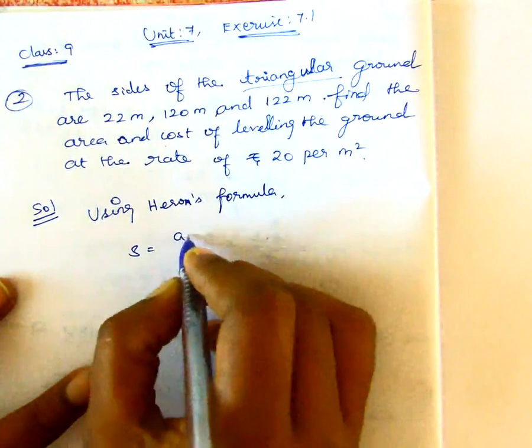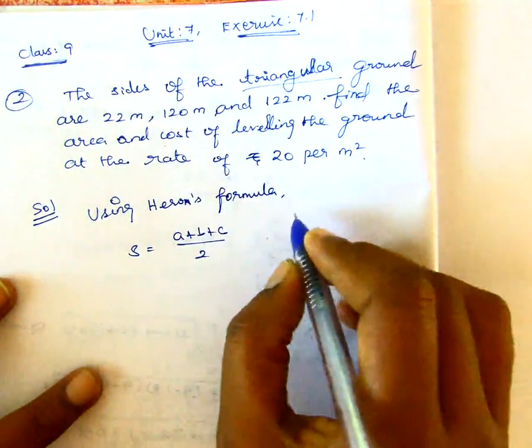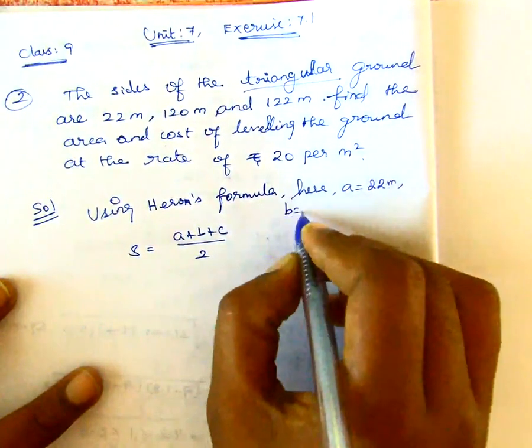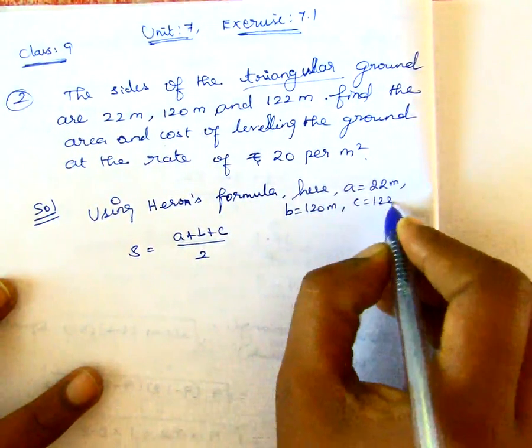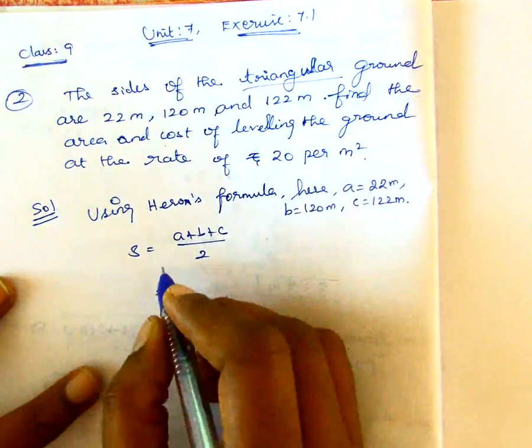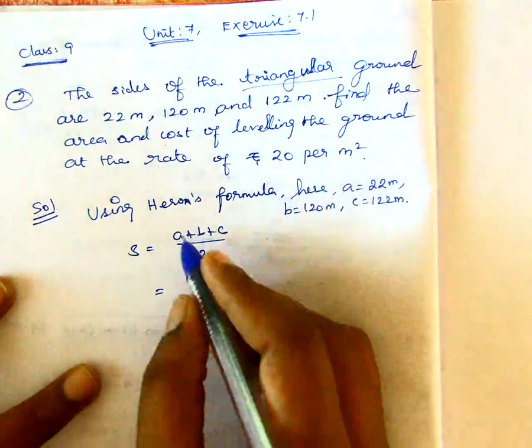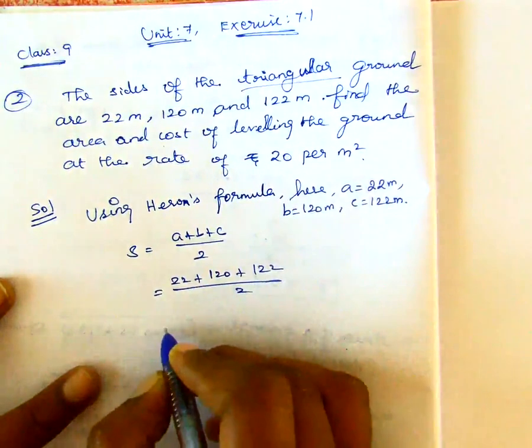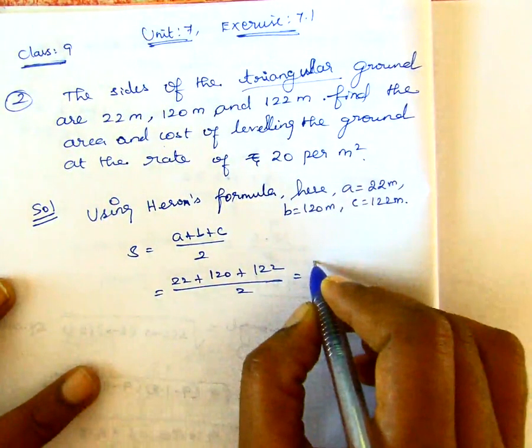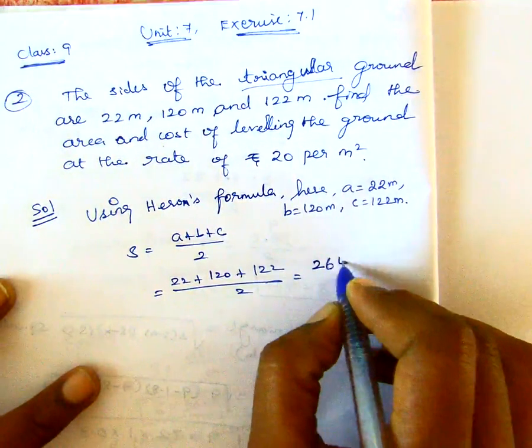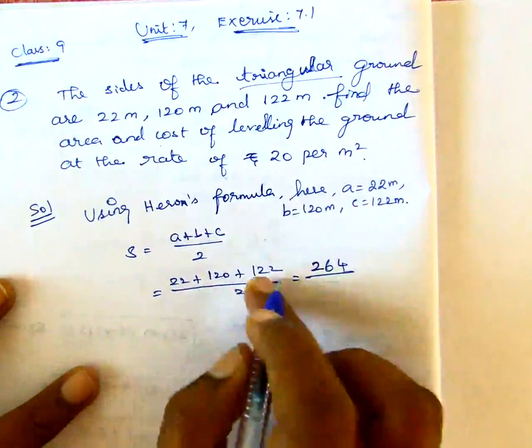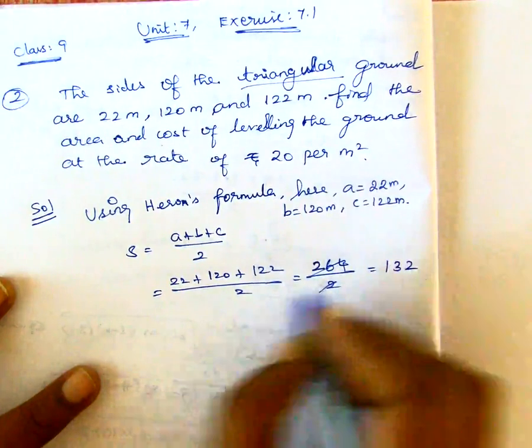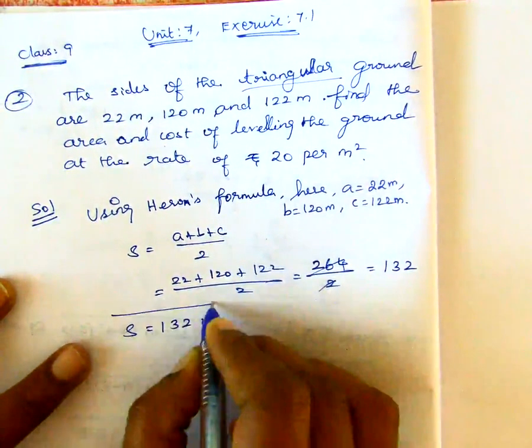S equal to A plus B plus C by 2. So, here we can use A equals 22 meter, B equals 120 meter, and C equals 122 meter. So, S equals 22 plus 120 plus 122 divided by 2 equals 264 divided by 2 equals 132 meter.